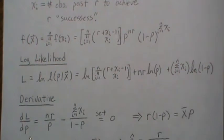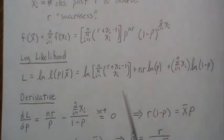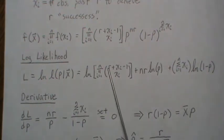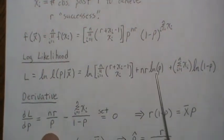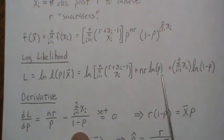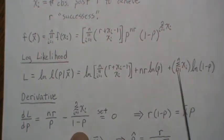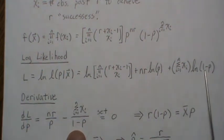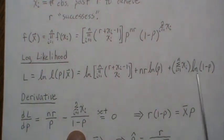Now the derivative with respect to P, our parameter, here there's no P, so it's constant and goes to zero. Here you get NR over P. Here you get the sum of the X_i's, and then it's 1 over 1 minus P, and then times the derivative of 1 minus P, which is minus 1.